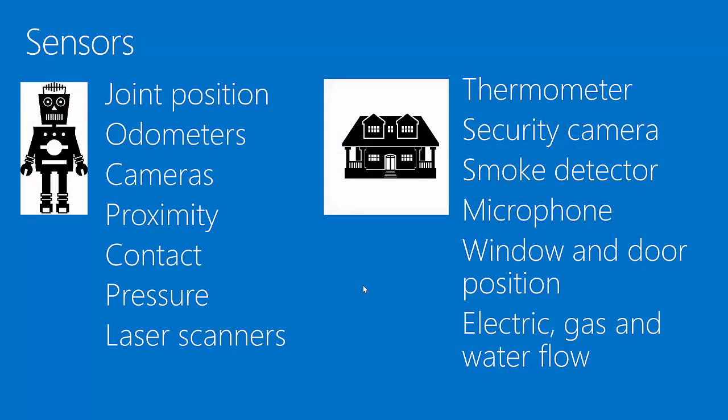A traditional robot has a variety of sensors. You can sense joint position, or wheel position. If it's a rolling robot, you can determine how far you've gone. You can have cameras, proximity detectors — you can tell how close you are to walls or obstacles. Contact sensors tell you if it's touching anything. Pressure sensors tell you how hard it's touching things. Laser scanners tell you how far away things are very accurately.